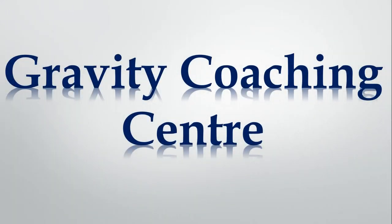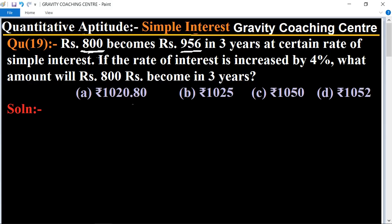Welcome to our channel Gravity Coaching Centre, quantitative aptitude chapter simple interest. Question number 19: Rupees 800 becomes rupees 956 in three years at a certain rate of simple interest. If the rate of interest is increased by four percent, what amount will rupees 800 become in three years? In this question, amount 800 becomes 956 in three years.